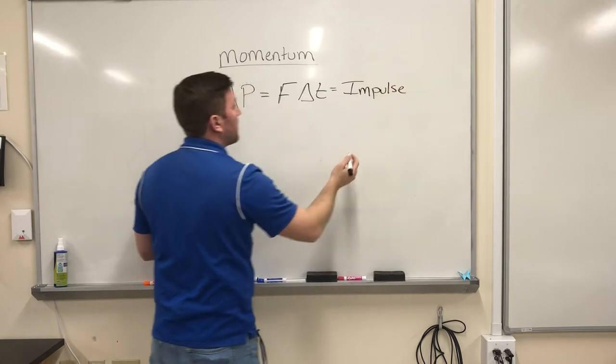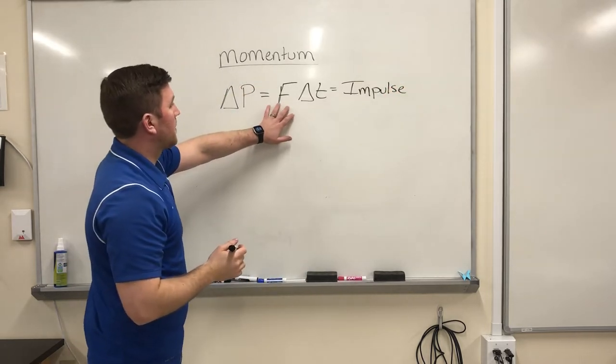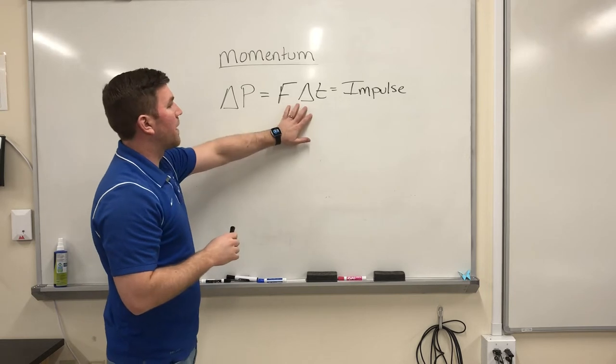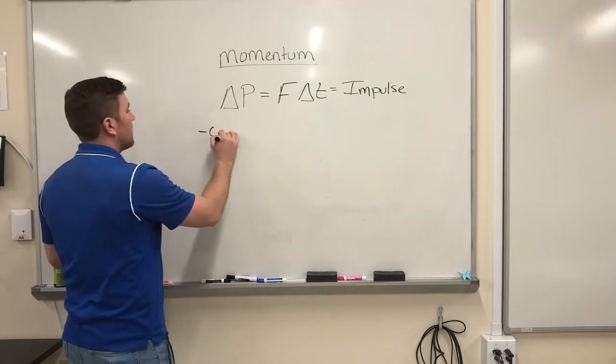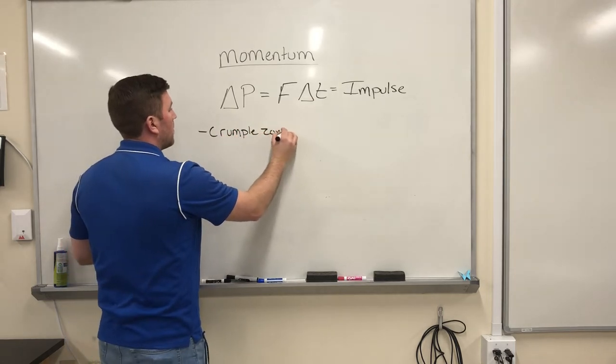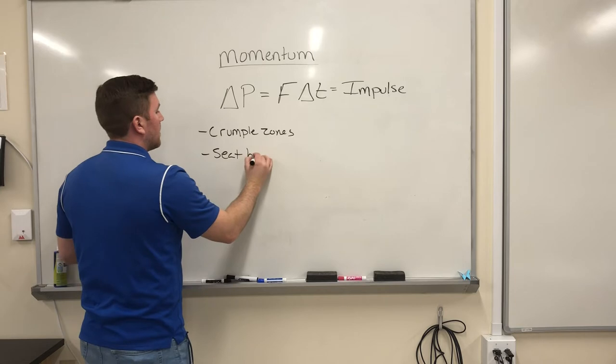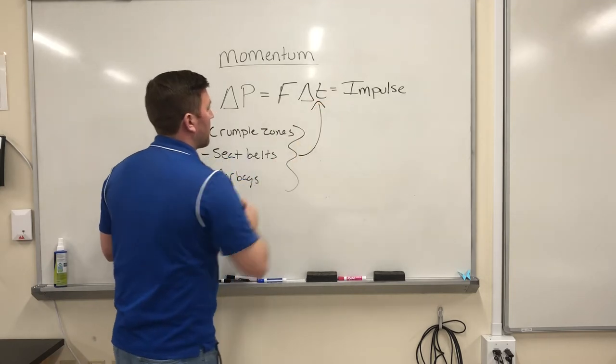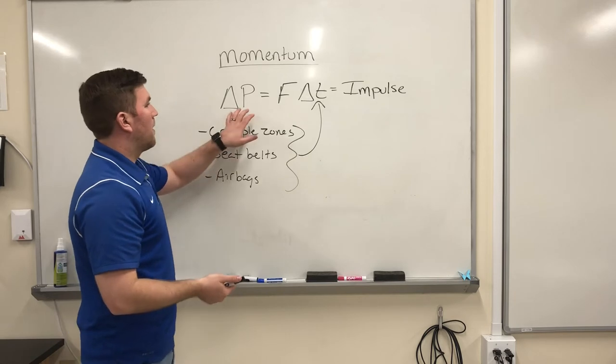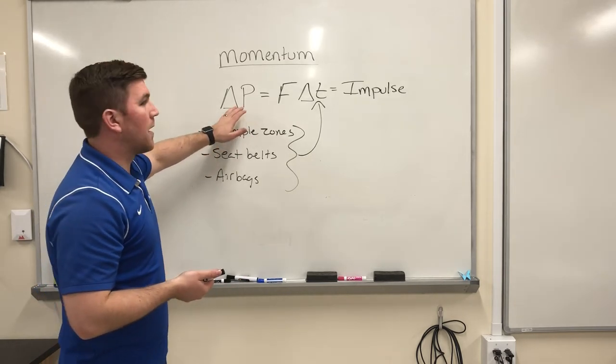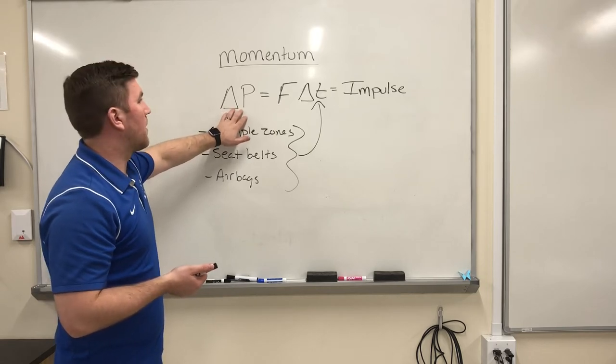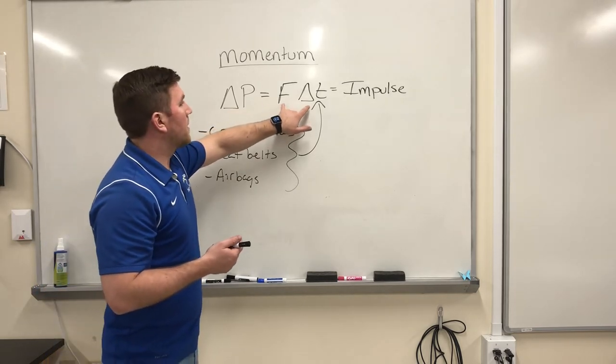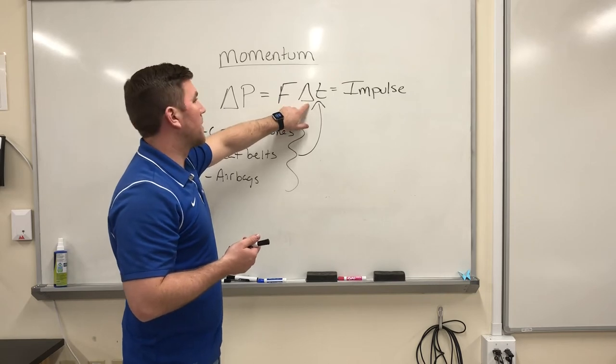When you feel a change in momentum, you feel an impulse. It's a force spread over an amount of time. And this is basically the idea behind every car manufacturer's safety equipment. So whether it is crumple zones, or seatbelts, or airbags, all of these go right back to this idea. If you start looking at the equation, if I'm going to come to a stop, let's say that I'm driving and I hit a tree. I'm going to come to a stop. I, as a car and as a person, I'm going to have all my momentum go to zero.